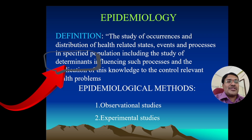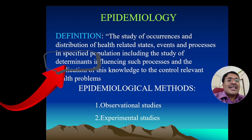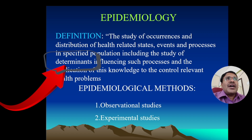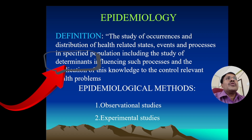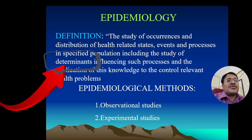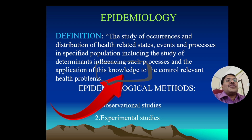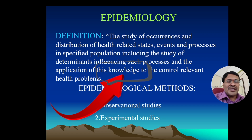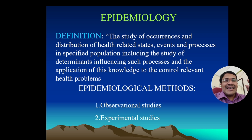The definition also includes 'the study of determinants influencing such processes.' Determinants here refer to what could be effective in controlling a disease — for example, a health intervention that is found effective is incorporated into a national program. That intervention is a determinant. By studying these determinants, we gather rich knowledge, and the definition then includes 'the application of this knowledge to the control of relevant health problems.'